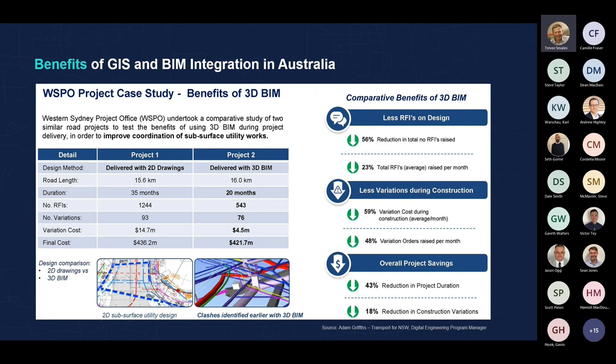Trevor added: we did a POC with a customer looking at a fairly intensive facility. It got down to what's the purpose — what do we want to get out of the digital twin? The 3D scan had a nice representation and you could do measurements, but they wanted to do a little bit more. The choice was made to take the 2D data they had and extrude that into a 3D model — they knew the size of pipes and how high off the ground — and that enabled integration with asset management for scheduling maintenance.